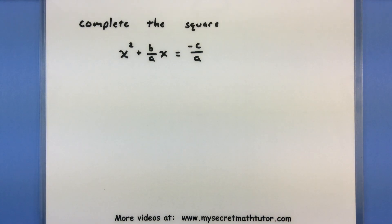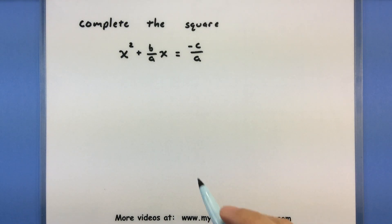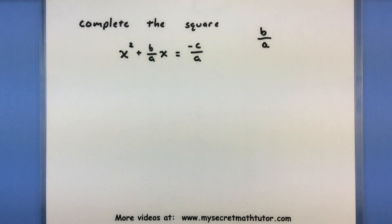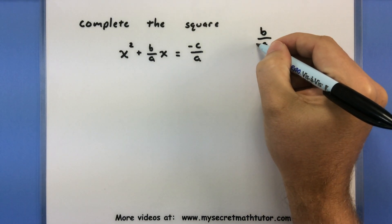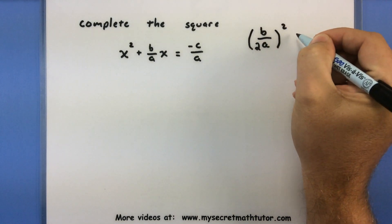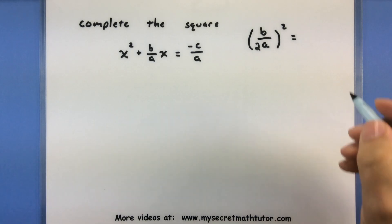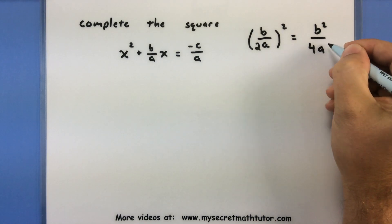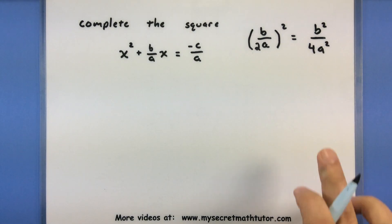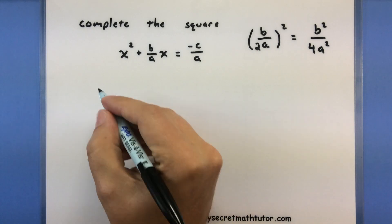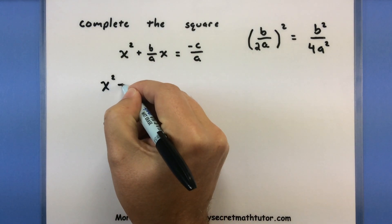Now again, if you haven't seen this method, this is a great time to go back and check out my other video. When it comes to completing the square, we look at the coefficient next to x — in this case b/a — and do something very special to it. We divide it by 2 and then square the result. So (b/a ÷ 2)² gives us b²/4a². This new number is what we use to complete the square — we're going to add it to both sides of our equation.